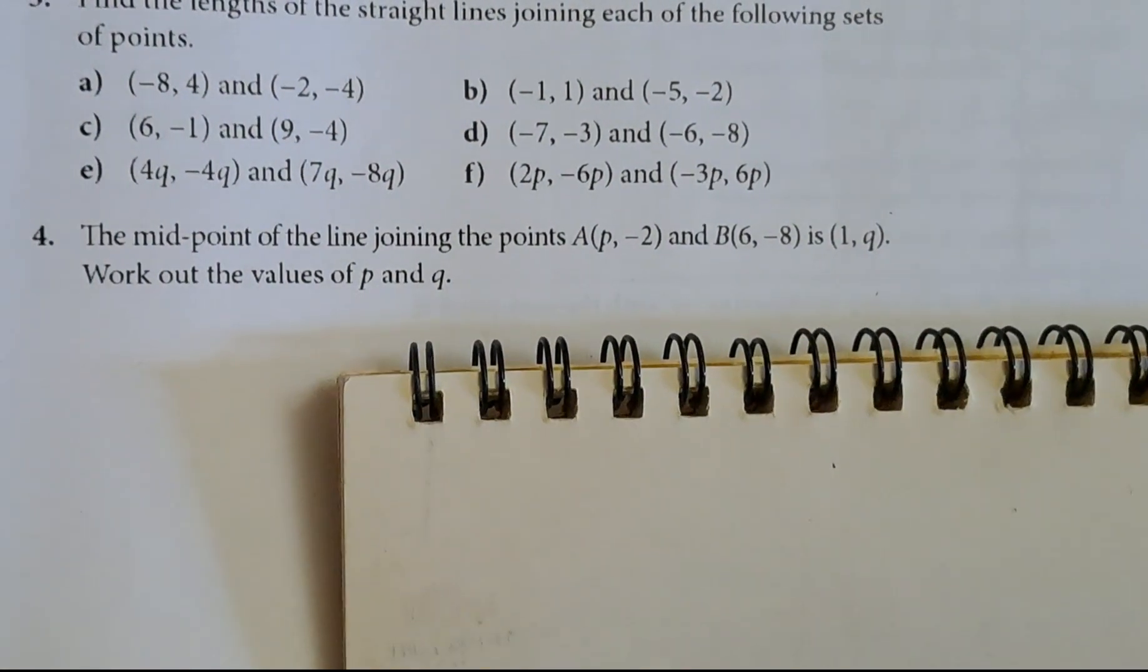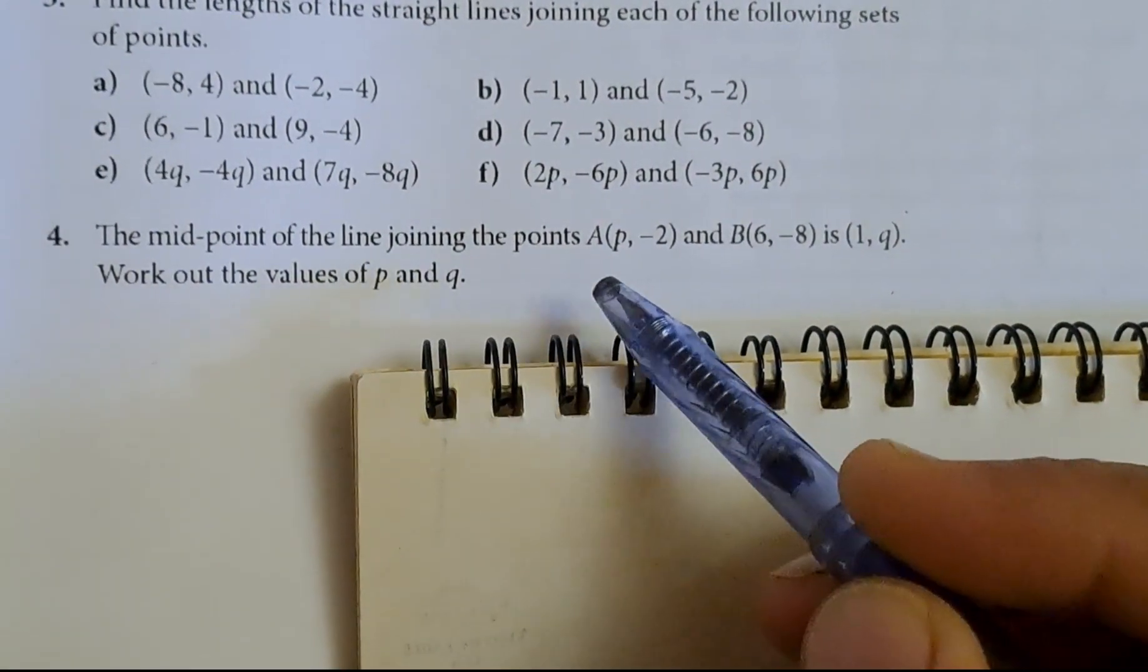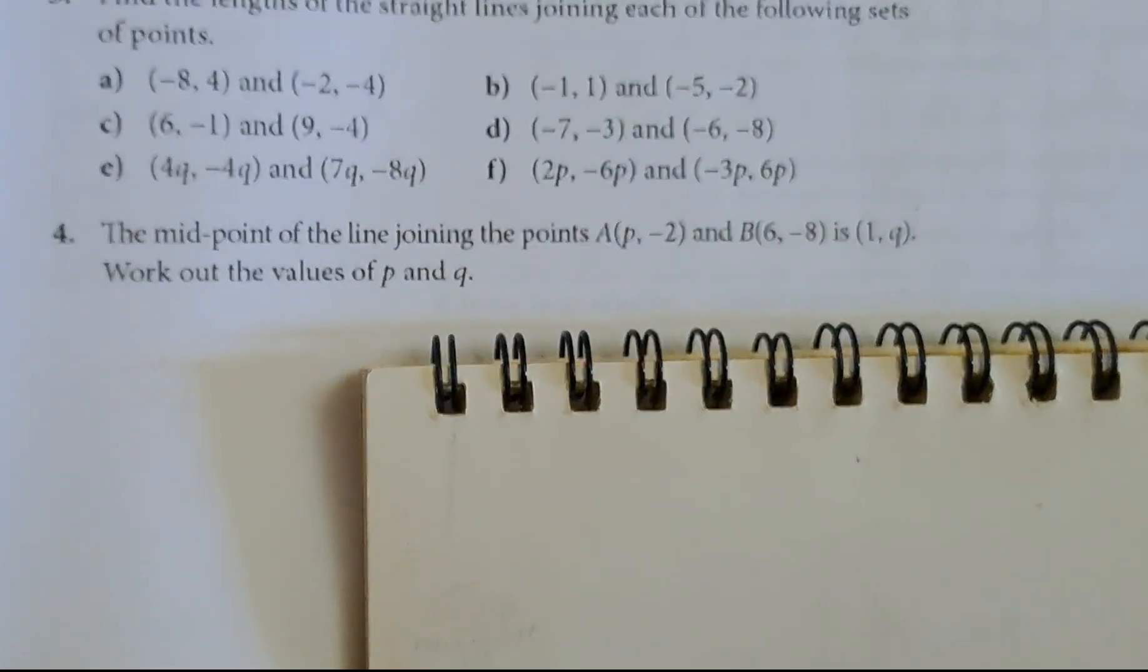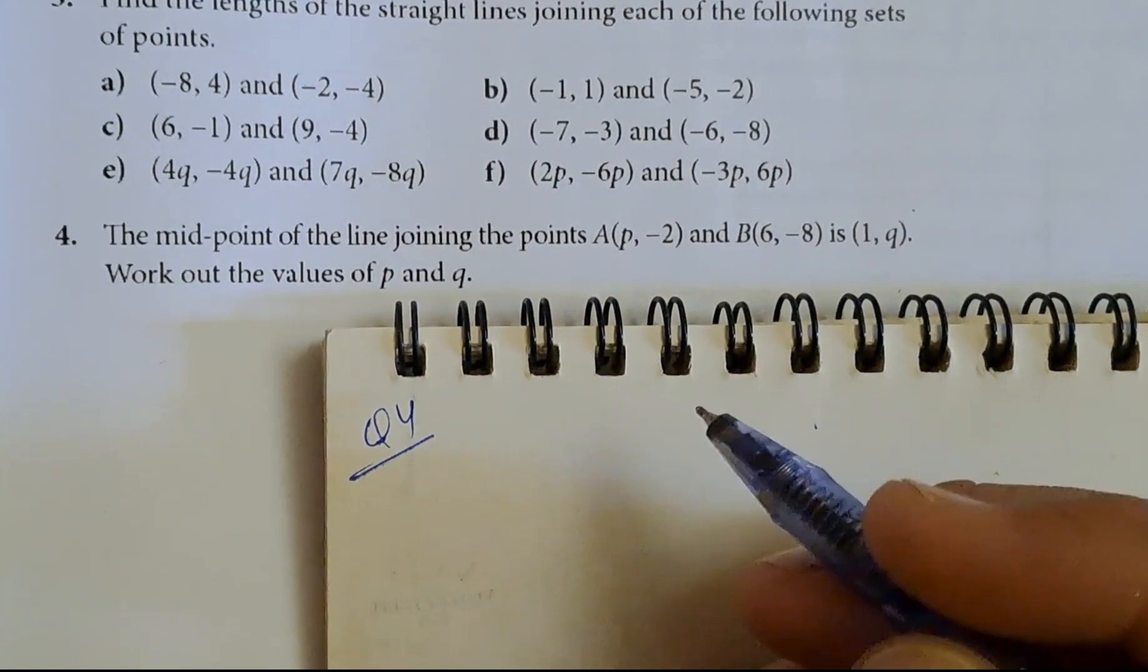The midpoint of the line joining the points A and B is M(1, q). Work out the values of p and q. This is question number 4.